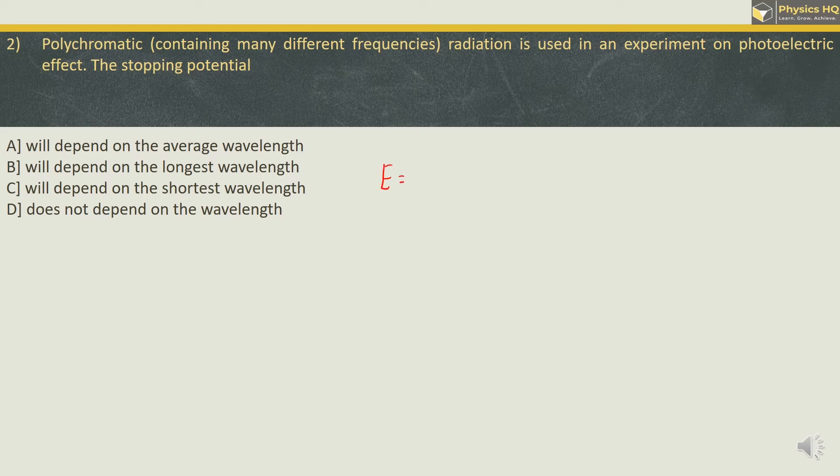As we have seen in the last sum, the energy provided by the photon is dependent upon the frequency. Higher is the frequency, higher will be the energy of the electron emitted, and the stopping potential required to stop it will also be higher. So stopping potential is directly dependent upon the frequency. Higher will be the frequency, higher will be the stopping potential.